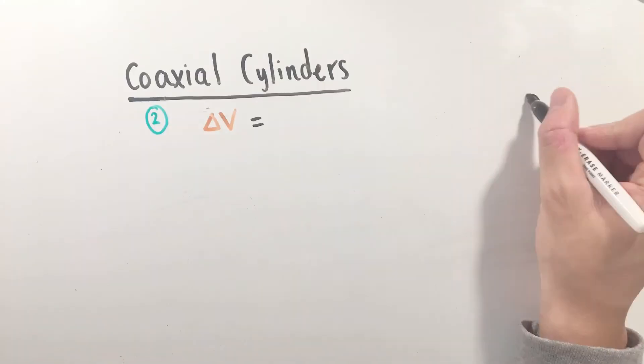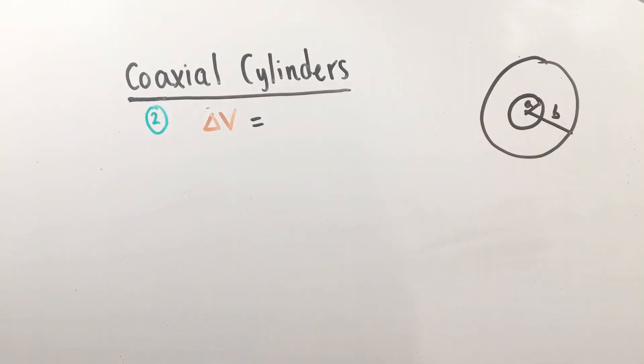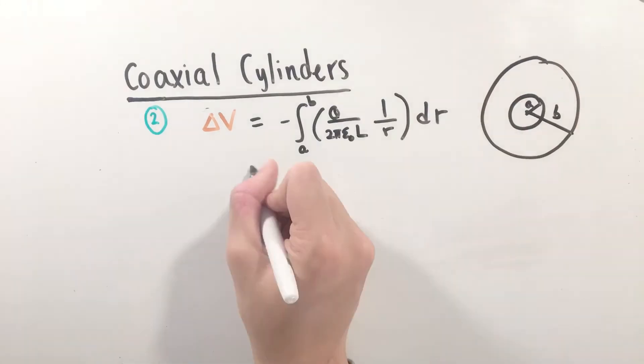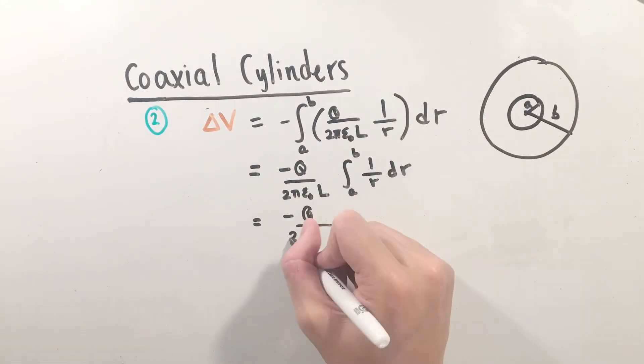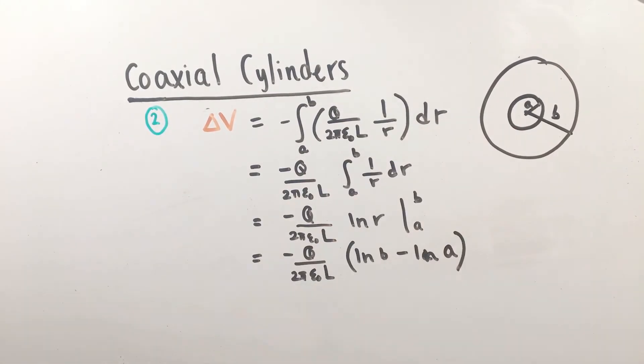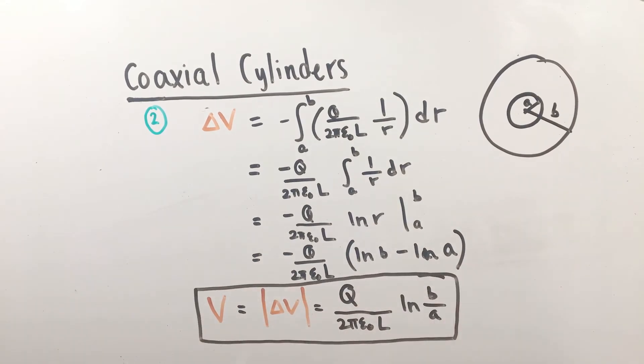To find the potential difference, let's integrate the negative of our electric field equation over the displacement between our inner and outer radii, starting from the inside and integrating along the radial path outwards. With some basic integration and logarithm rules, we can arrive at a simple equation for the potential difference V across our cylinders.